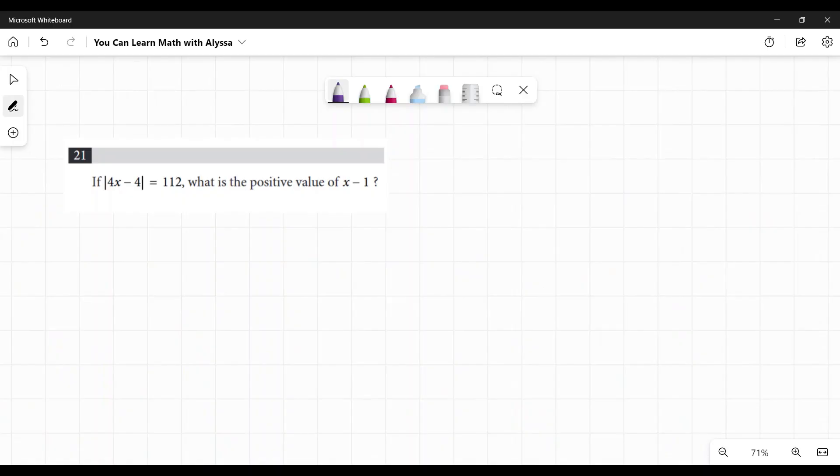Number 21. If the absolute value of 4x minus 4 equals 112, what is the positive value of x minus 1?